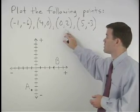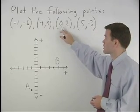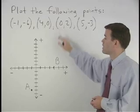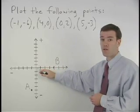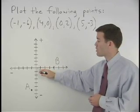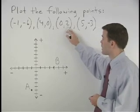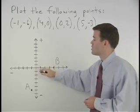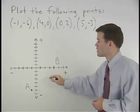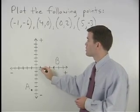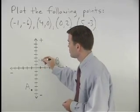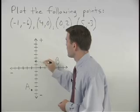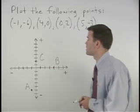For the point 0, 2: since the x coordinate is 0, we move 0 units to the left or right from the origin. And since the y coordinate is 2, we move 2 units up. So we go 0 to the left or right and 2 units up, and we can label that point C.